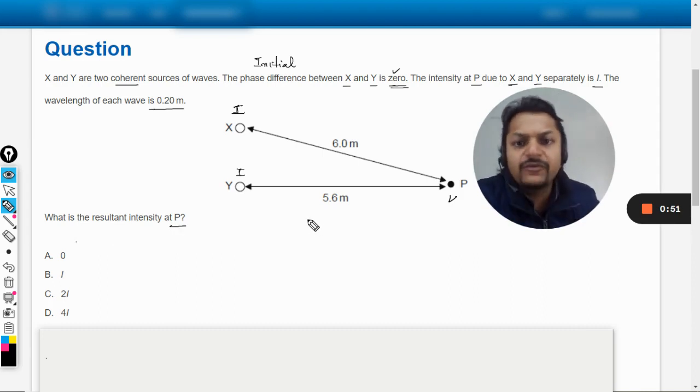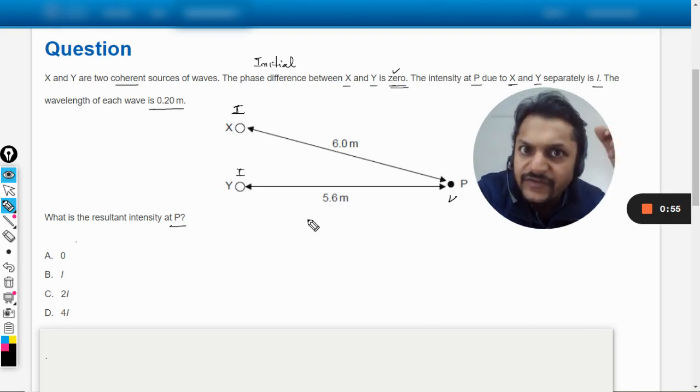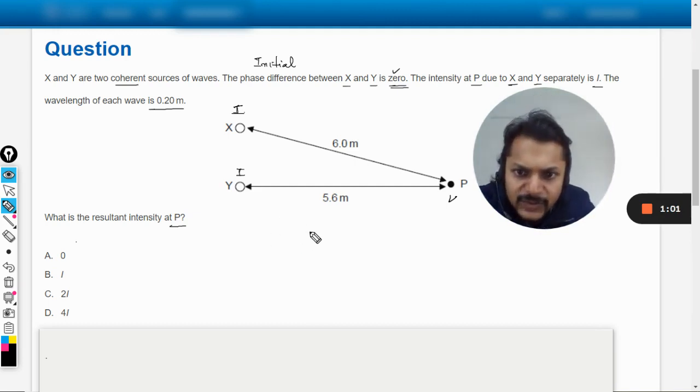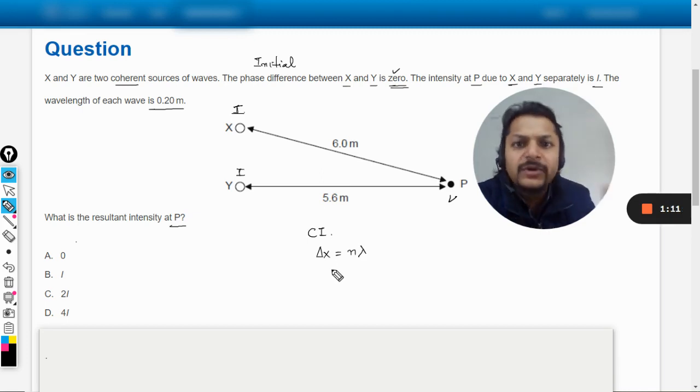So how do we do it? First of all we have to understand the conditions of constructive interference and destructive interference here. Let me give you a little detail on it. For constructive interference, first of all we talk about the path difference.